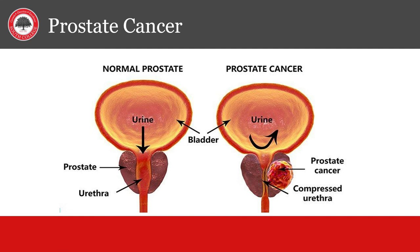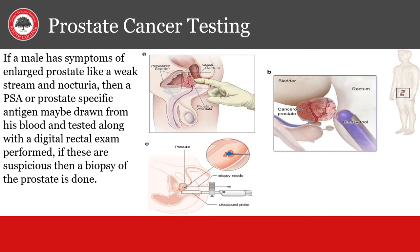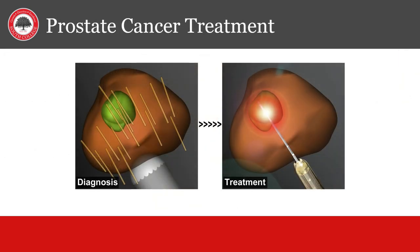The prostate gland can become cancerous — in fact most men will get prostate cancer if they live long enough. This can also cause the urethra to become obstructed and cause post-renal failure. Prostate cancer grows slowly but can spread to other areas of the pelvis and beyond given enough time. It is diagnosed by symptoms of a weak urine stream, nocturia, and hematuria. A PSA or prostate-specific antigen is drawn from the blood along with a digital rectal exam. If these are positive, a biopsy of the prostate is done. Treatment options include placing radioactive pellets in the prostate, cryotherapy, or as a final option, radical prostatectomy, which can cause impotence — the inability to have an erection.